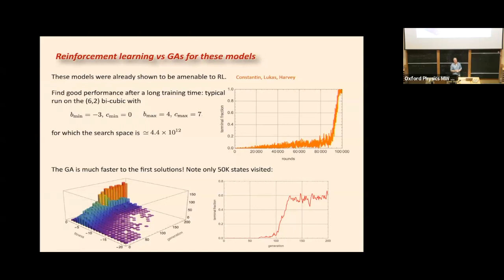Question: Is there any way to have the policy learn how to change the mutation rate? Yes, people do try to optimize the genetic algorithm parameters that way — to try and optimize the mutation rates using a learned policy. In this sort of problem it's probably not worth setting up because you can sort of do it by hand.